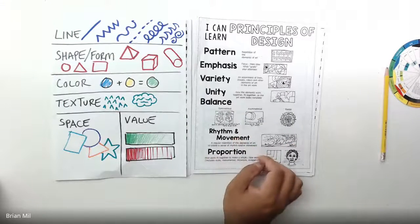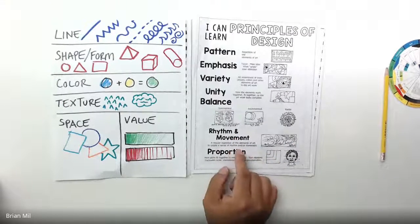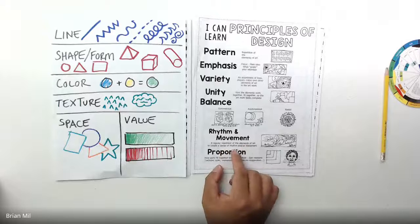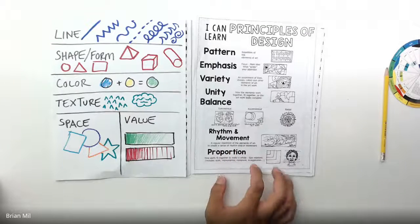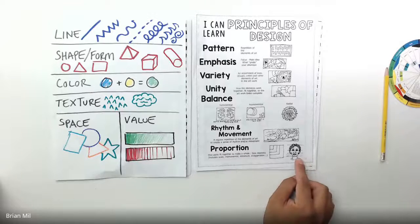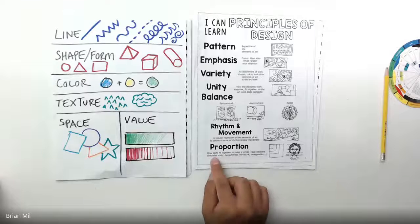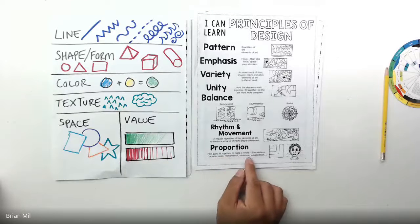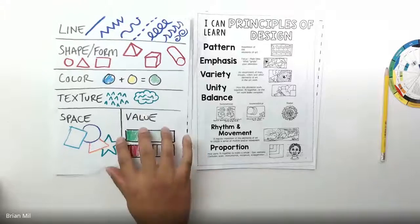Next one is called rhythm and movement. Basically a regular repetition of the elements of art to create a sense of rhythm and or movement. And last but not least, we did this already, which was proportion. And you can see an example of a self-portrait over here. So basically what proportion is, how parts fit together to make a whole. Size relations, basically. There we go.